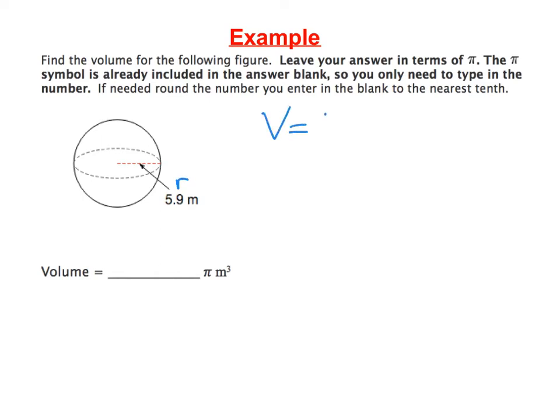We write down our formula volume equals 4 pi r cubed divided by 3. And then we can go ahead and sub in 5.9 for r. So that's 4 pi times 5.9 cubed all over 3.